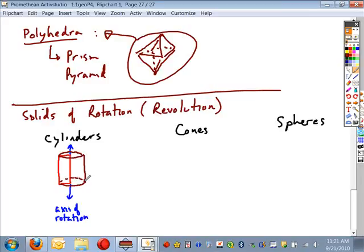Okay, so a cylinder is a solid of rotation or solid of revolution formed by rotating a rectangle along one of its sides.